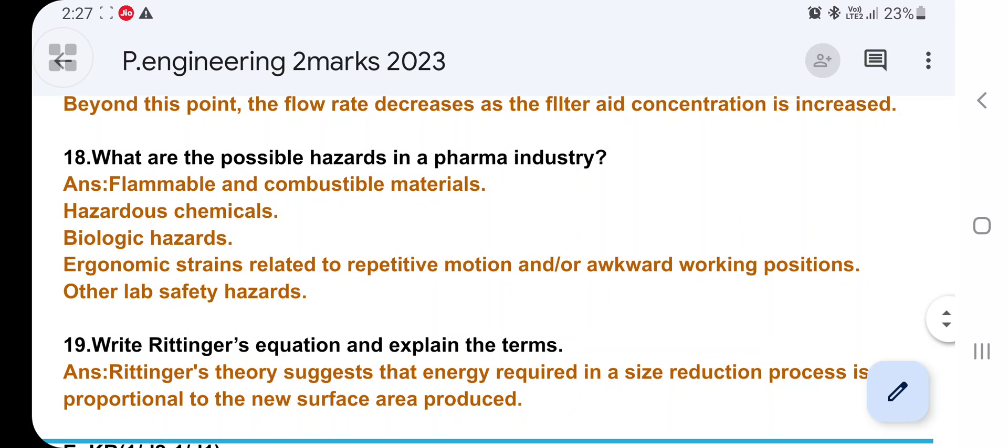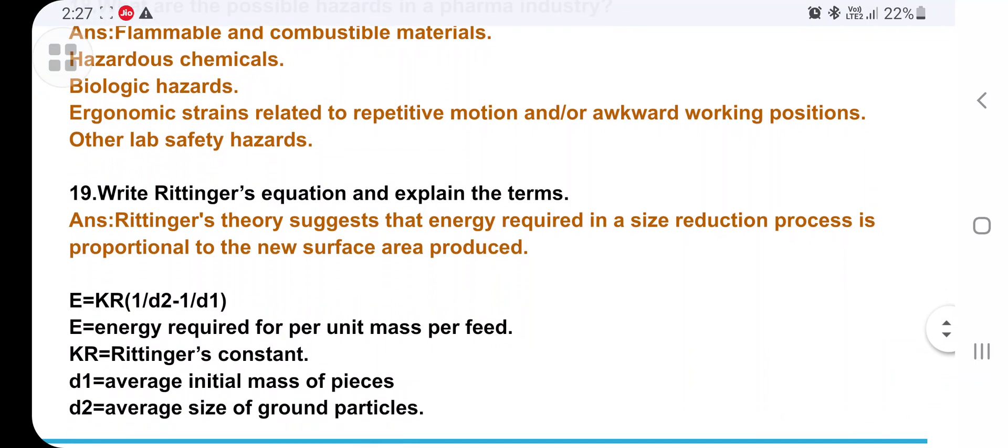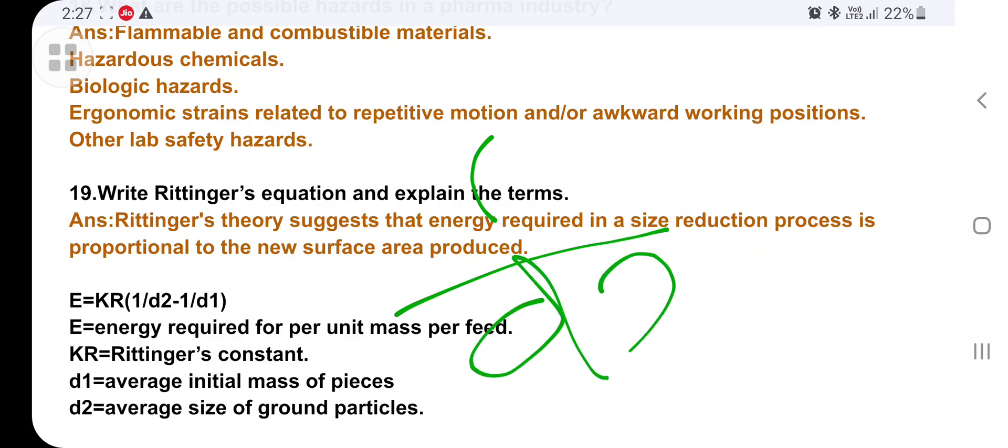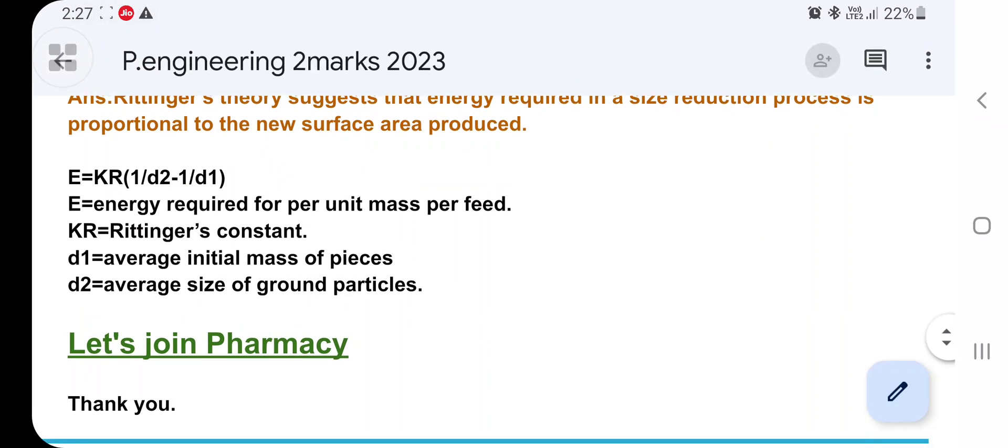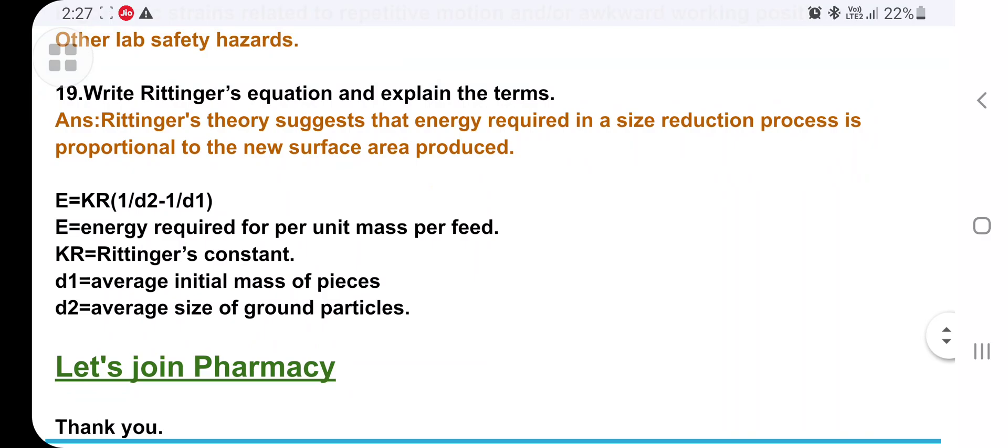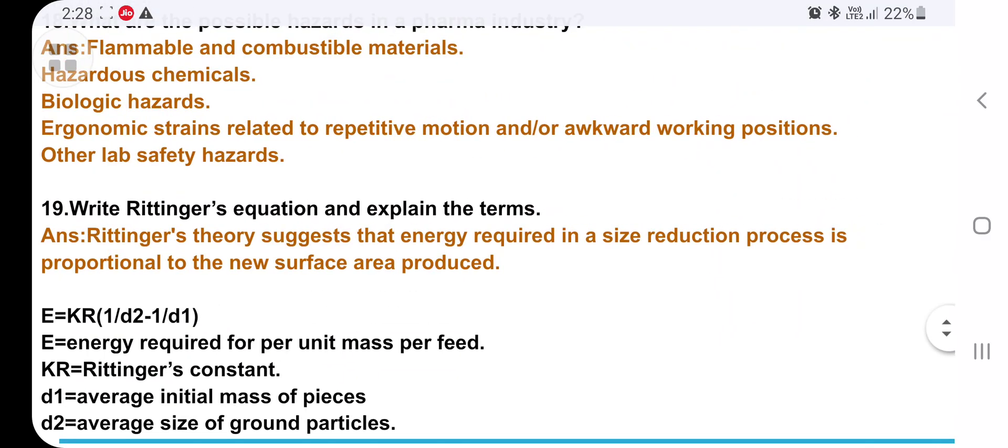What are the possible hazards in chemical pharma industries? Flammable and combustible materials, hazardous chemicals, biological hazards, other lab safety material hazards. Write Rittinger's equation and explain the terms. Rittinger suggests that energy required in size reduction process is proportional to the surface area produced. Greater the surface area, greater energy is required. The equation is E=KR(1/d2 - 1/d1), where E is energy required for unit mass per feed, KR is Rittinger's constant, d1 is average initial mass of pieces, d2 is average size of ground particles.